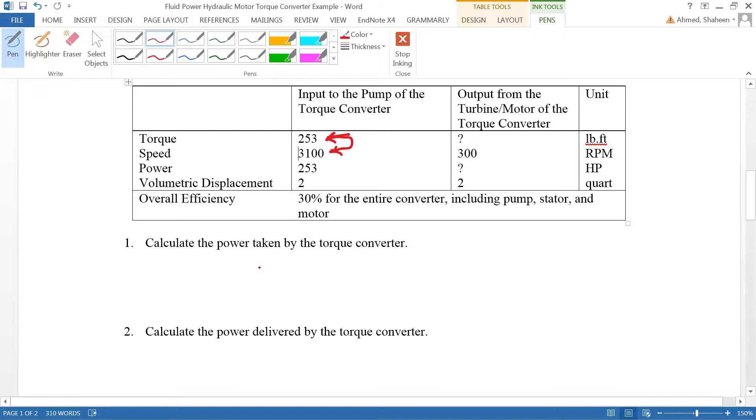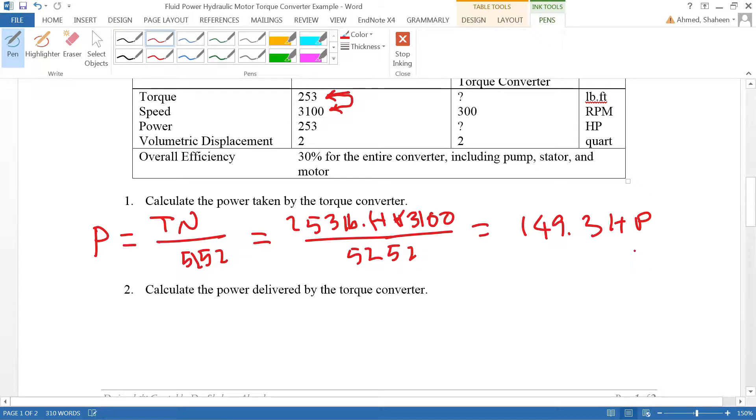If you just write the equation like this: P equals T times N divided by 5252. Our torque is given 253 pound-feet times 3100 RPM then divided by 5252. I have got this number 149.3 horsepower.